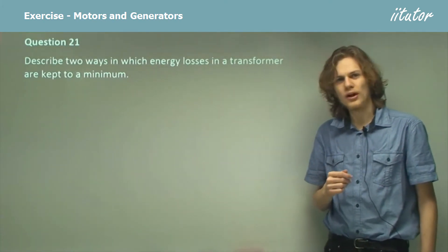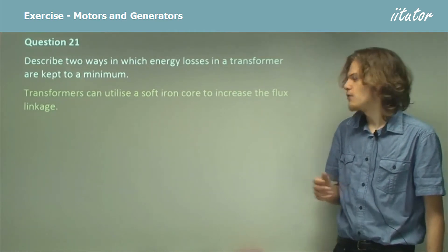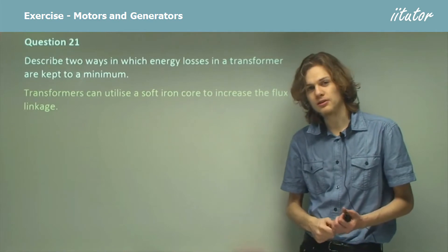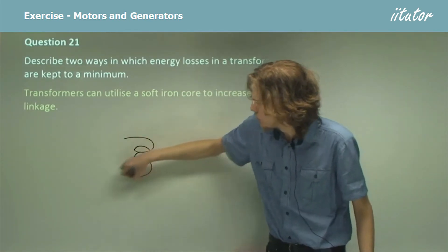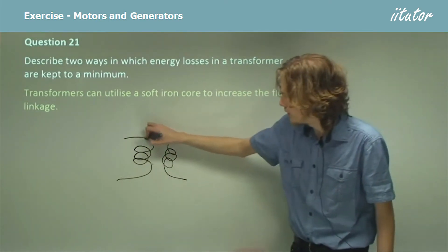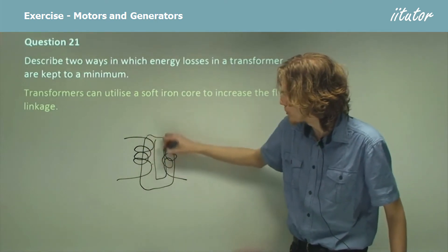So let's look at one of the ways that we can use. Soft iron cores. If we have a soft iron core in a transformer, then it means that we can increase the flux linkage. It means that instead of just having two wires like this, we have them connected by a solid iron core, which will look something like that.